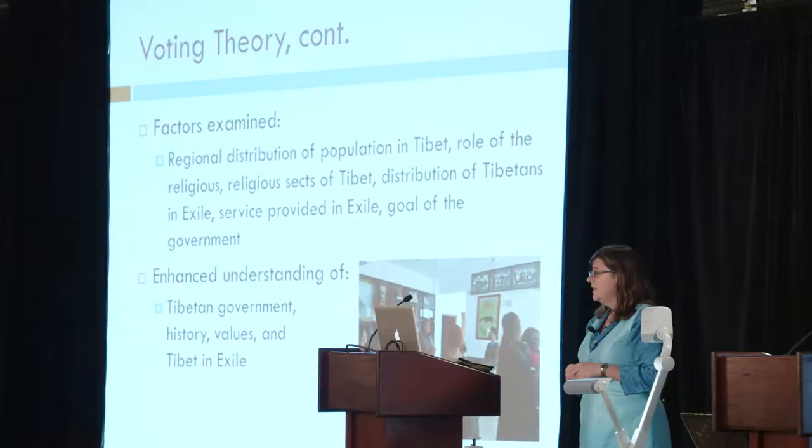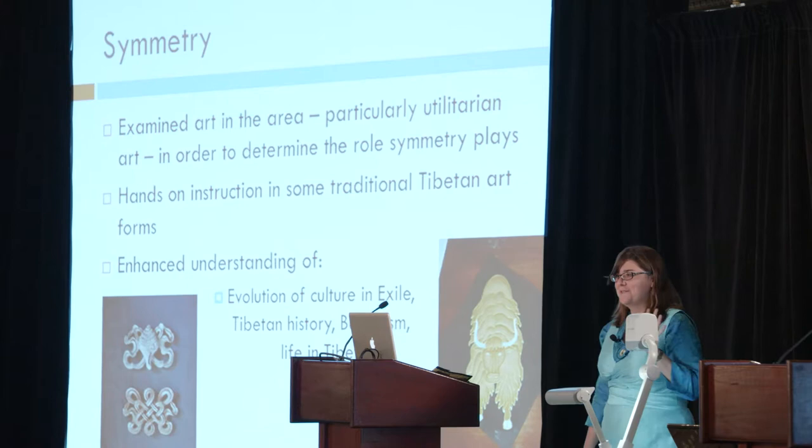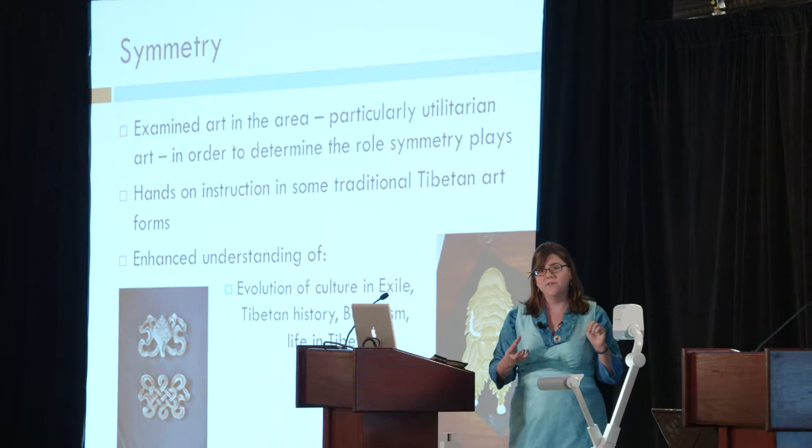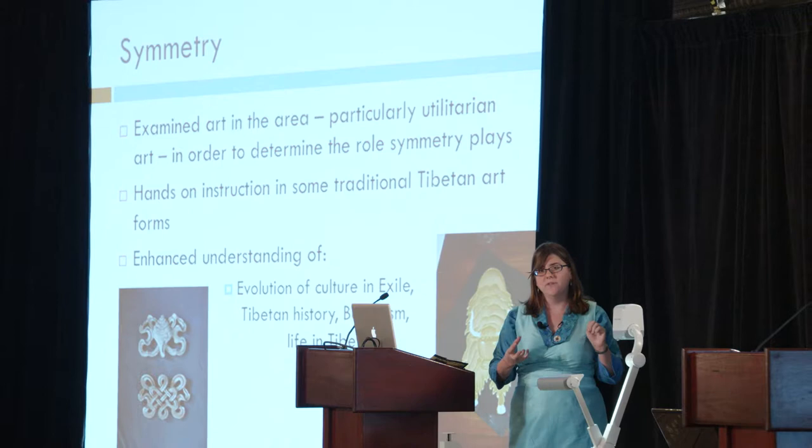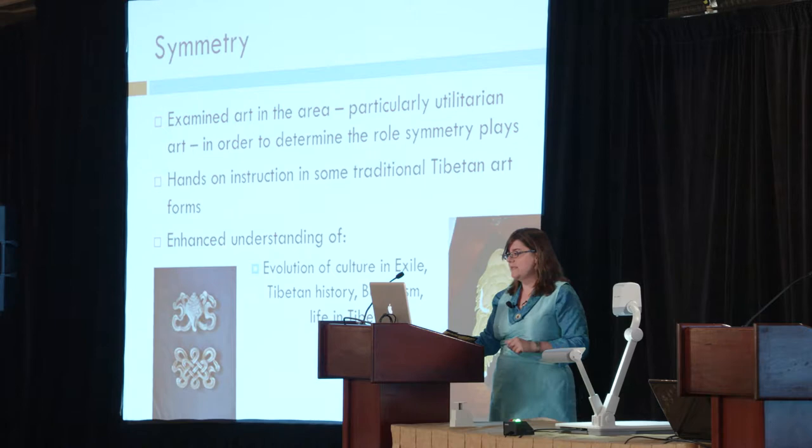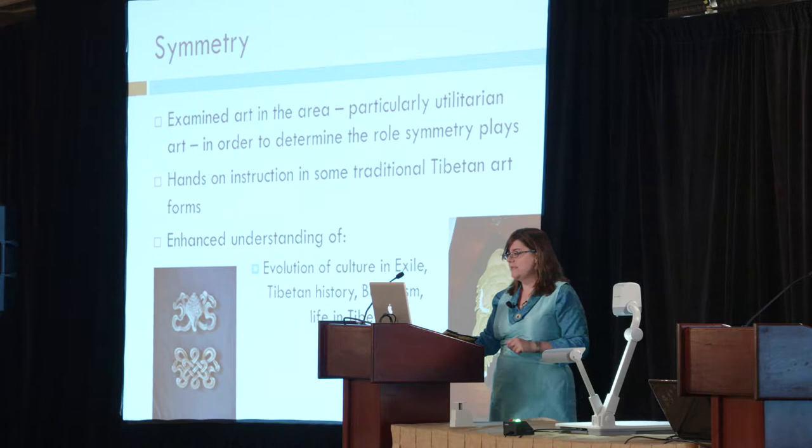The fourth unit, which I imagine everybody is familiar with, is art and symmetry. Students were really interested in the utilitarian nature of things that were still also art, such as the gates in the area. They had to determine the role that symmetry plays, and they also made some art — you can see examples here. This helped them understand the evolution of culture in exile, Tibetan history, Buddhism, and life in Tibet.